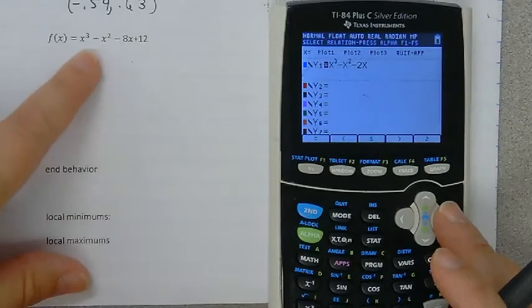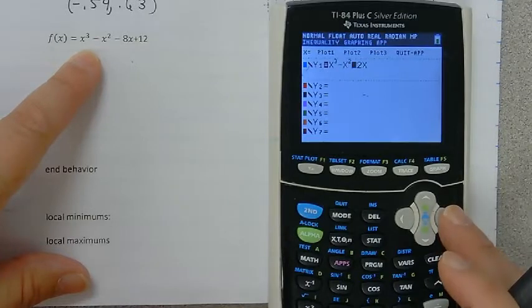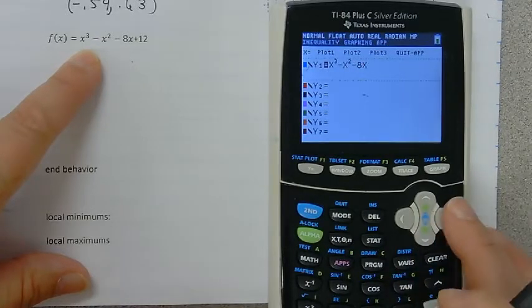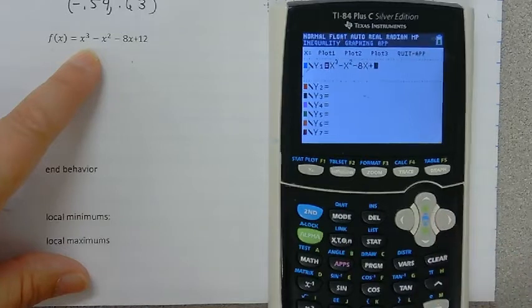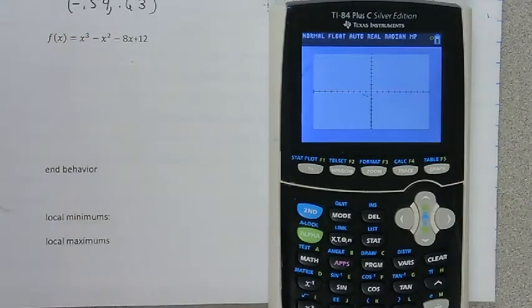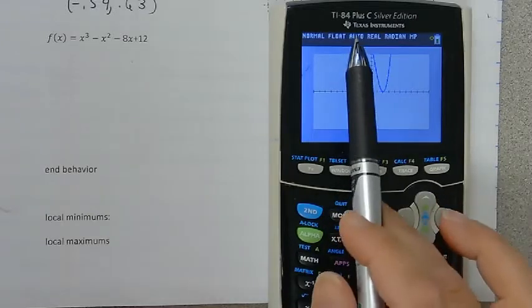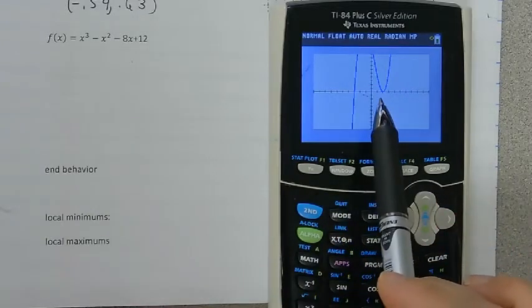The second problem is x cubed minus x squared minus 8x plus 12. I'm going to hit graph just to kind of get a look. It looks like it crosses through negative 3 and it goes way up here and crosses through 2.